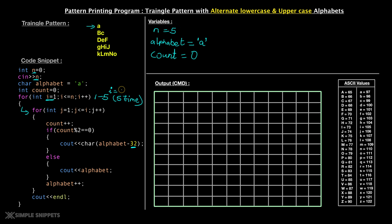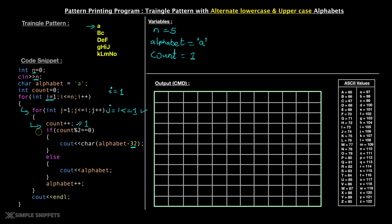Let's say i equals one — we are at the very first iteration. We initialize int j equals one; j has to be less than or equal to i, which is also one. Since j equals one is less than or equal to one, yes, we go inside this for loop. Here we have initialized a count variable — I'll tell you why. We say count plus plus, so count was zero and now becomes one.